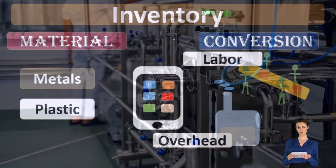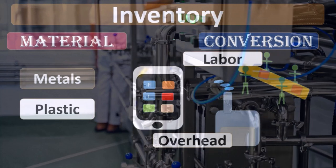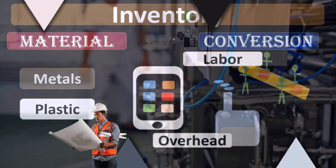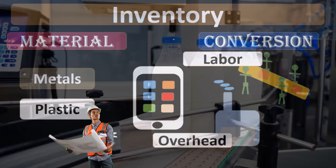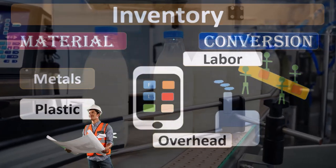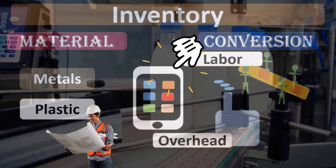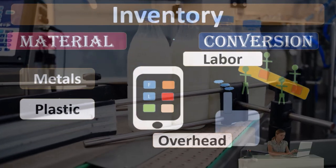anything that's in the factory, even the depreciation on the factory, even the maintenance of the factory, those are all components in overhead that are needed in order to convert the materials to the end product, the inventory, the tablet. And therefore they should be in there in some type of way.